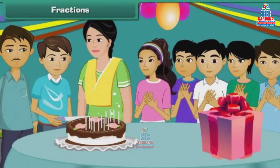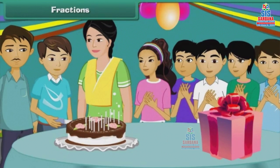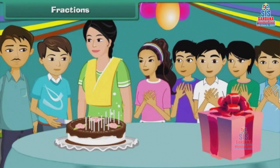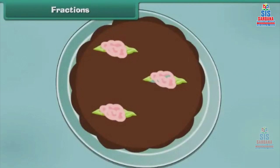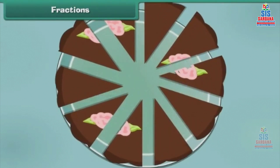Rishabh is celebrating his birthday at home with his family members and some close friends. His father gets him his favorite chocolate cake. Here is how Rishabh divides the cake among those present at the party. Each person gets one by tenth of the cake.